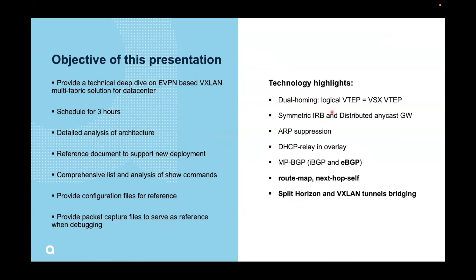So highlights — these are previous features that we also added into this solution. The focus is really the route map, the next-hop itself, the horizon, and the tunnel bridging. All these are previous features: ARP suppression, DHCP relay. But we wanted to combine everything as a full solution, that's why we added all these in the demo.